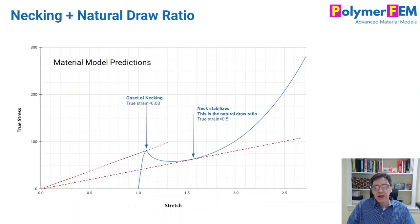So let's talk a little bit about how would you know approximately when necking would occur and how would you know the natural draw ratio in the specimen. Well, if you plot the predictions from material model in this case, or experimental data if you have it, of true stress versus stretch.